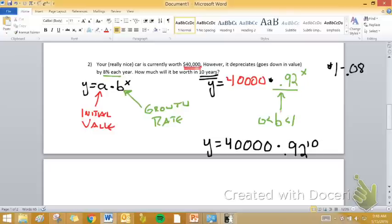And I'm going to come over to my calculator again. 40,000 times 0.92 to the 10th. And this means our car is going to be worth about $17,376 ten years later.